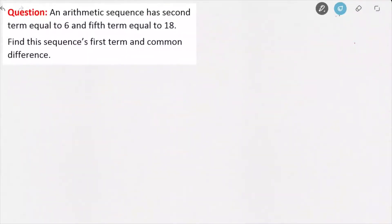In this video, we're going to be learning how to solve a typical exam type question with arithmetic sequences. We're told that an arithmetic sequence has second term equal to 6 and fifth term equal to 18, and we're asked to find the sequence's first term and common difference.